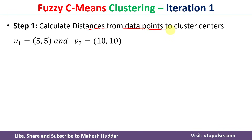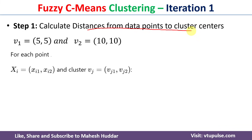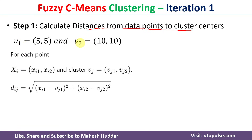In the first iteration, we need to find the distance from each data point to the cluster centers. We have data points x1 through x5 and centers v1 and v2. Using the formula dij = sqrt((xi1 - vj1)² + (xi2 - vj2)²), where i refers to the data point and j refers to the center.